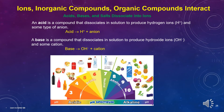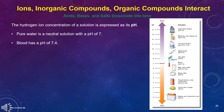An acid is a compound that dissociates in solution to produce hydrogen ions (H+) and some type of anion — acid equals a hydrogen ion plus an anion. A base is a compound that dissociates in solution to produce hydroxide ions (OH-) and some cations. The hydrogen ion concentration of a solution is expressed as its pH. Pure water is a neutral solution with a pH of 7, and blood has a pH of 7.4. Please pause the video and look at the picture to roughly know where household items fall on the pH scale.